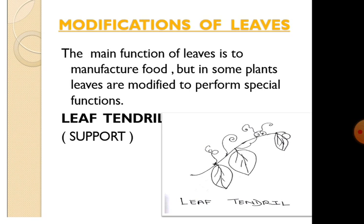Now, the main function of leaves is to manufacture food. But in some plants, leaves are modified to perform some special functions. First is the leaf tendril, meant for support. In some plants, leaves are modified into thin, thread-like coiled structures called tendrils. When they come in contact with any object, they coil around it, and that helps the plant to climb. We can see such tendrils in the case of pea plants.